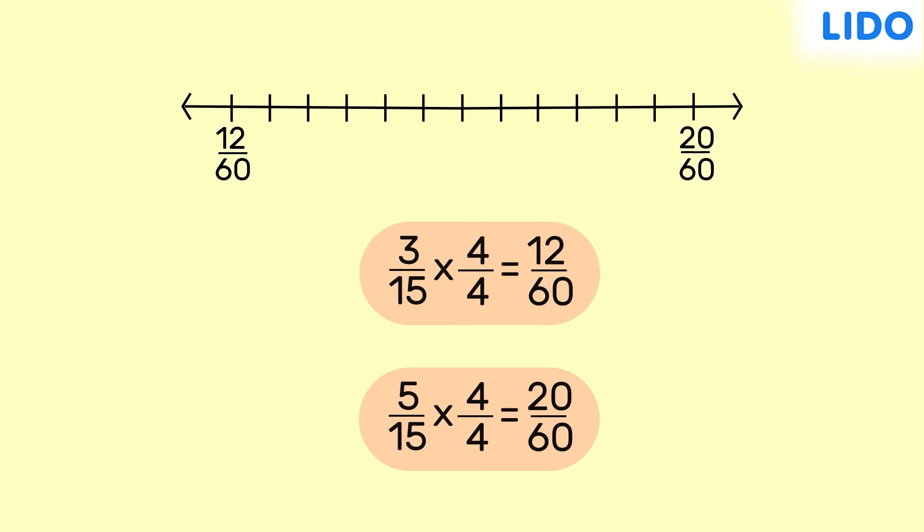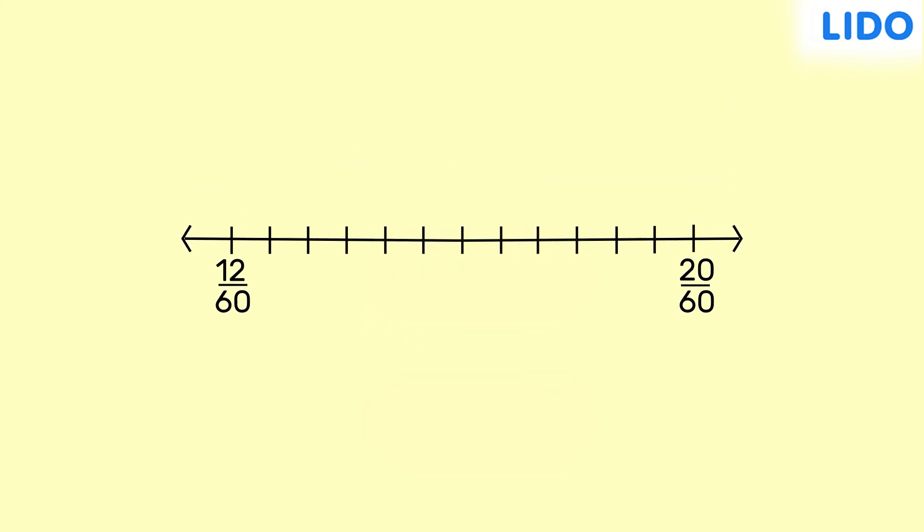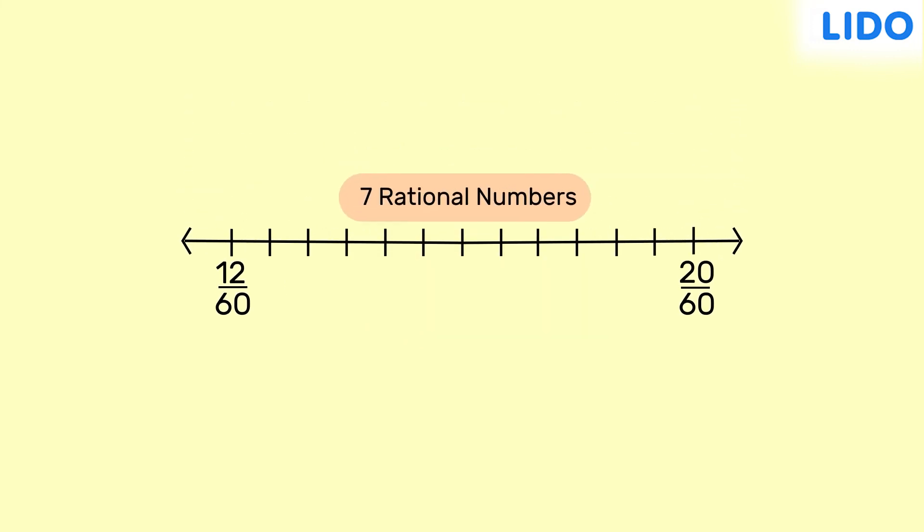Now, between 12 by 60 and 20 by 60, there are 7 rational numbers. And, they are 13 by 60, 14 by 60, 15 by 60, 16 by 60, 17 by 60, 18 by 60 and 19 by 60.